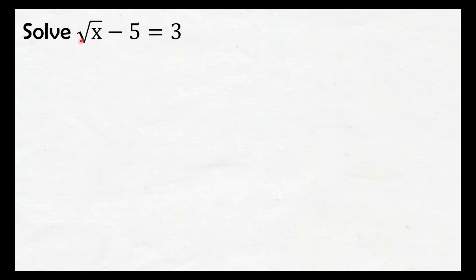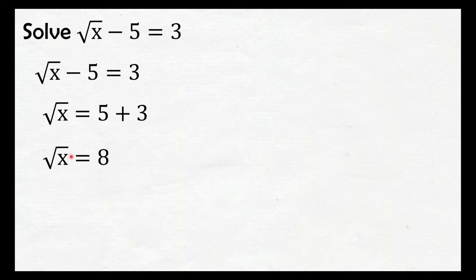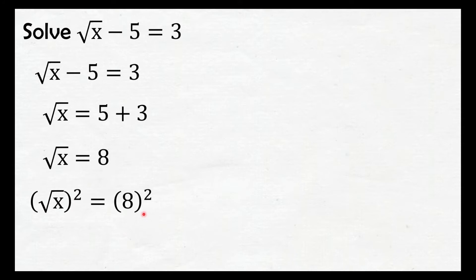Next is: solve square root of x minus 5 equals 3. Dito, hindi naka-isolate si square root of x — kailangan i-isolate natin siya. Gagawin natin, ililipat natin si negative 5 sa right side — from negative 5, nilipat natin sa right side, naging positive 5. Combine natin itong 5 at 3, that is 8. So, we have square root of x equals 8. I-square natin both sides — square of square root of x is x, and 8 squared, that is 64. So, x equals 64.